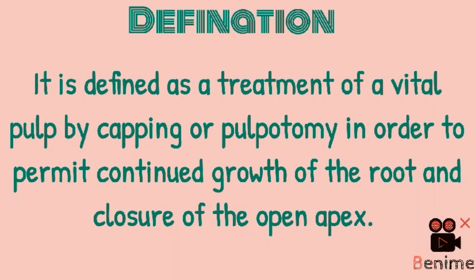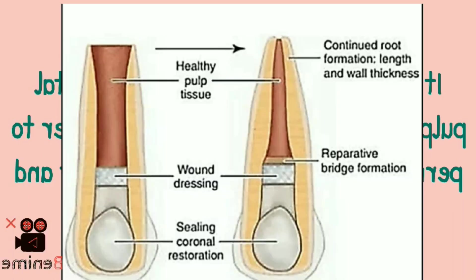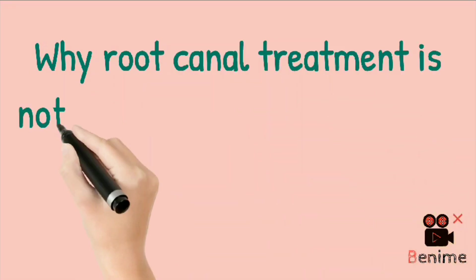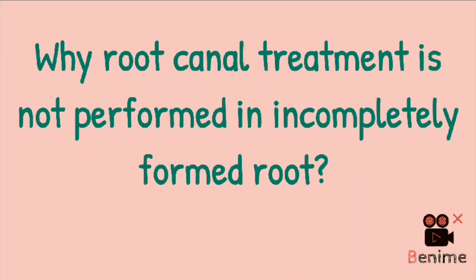In which tooth do we perform apexogenesis? Apexogenesis is performed on a young permanent tooth with incompletely formed apices that has a vital pulp. During my final year, I always had this doubt — why can we not perform RCT in an incompletely formed root? A simple, sorted answer to this question would be: an immature endodontically treated tooth has poor long-term prognosis.